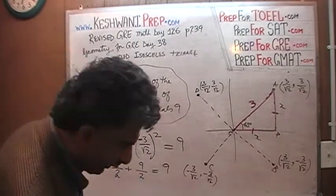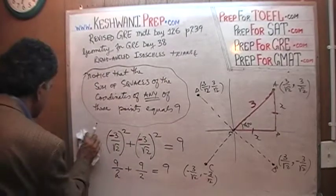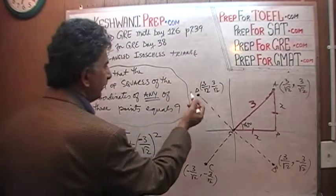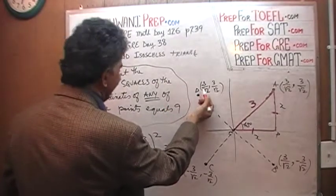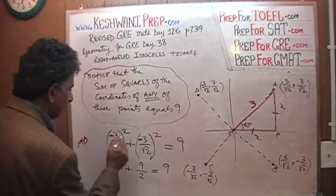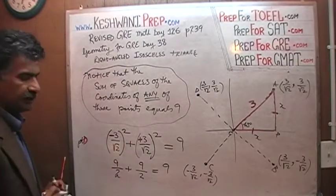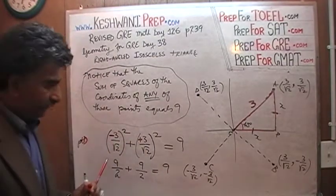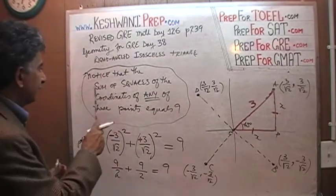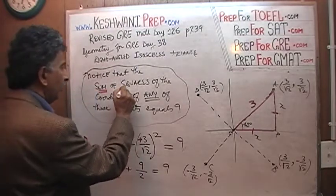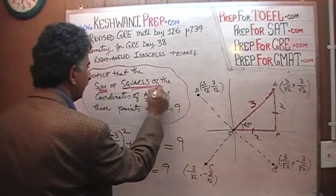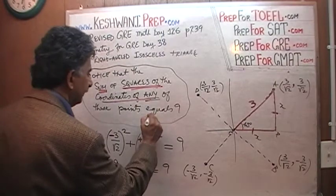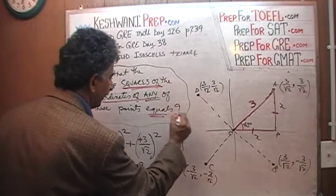Finally, we go to point D. The same story repeats — x is negative and y is positive, but it doesn't change anything. As you can see clearly, the sum of the squares of the coordinates of any point does in fact equal 9.